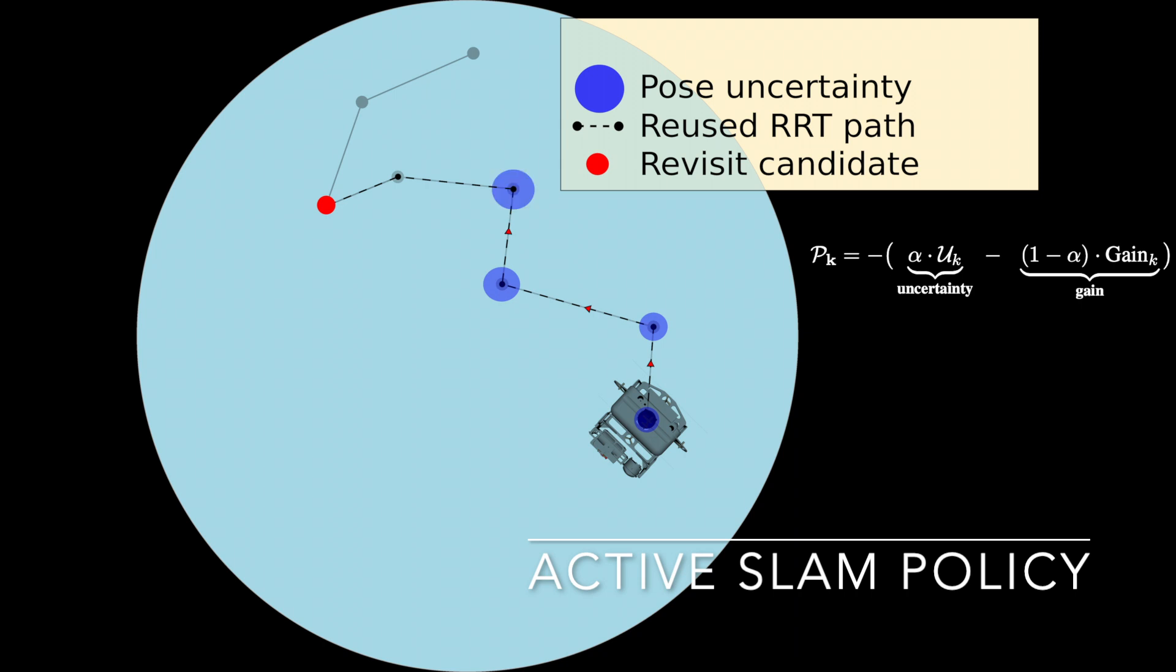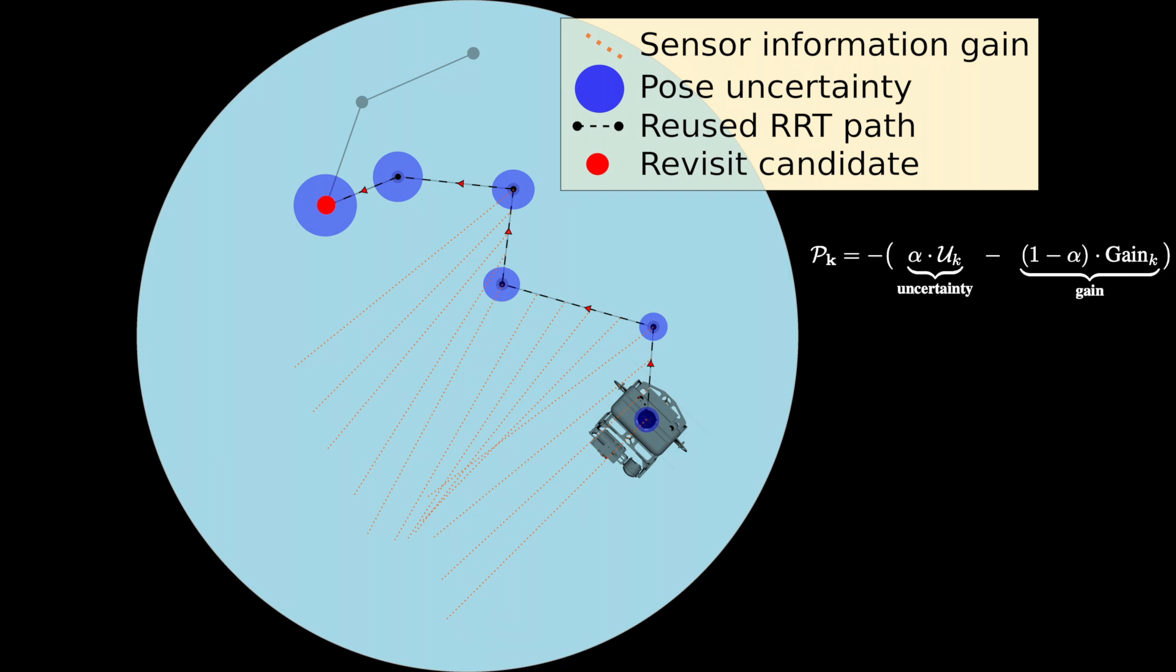The active policy computes a utility function comprising of the propagated uncertainty over a revisit sequence and the sensor information gained in the sequence.